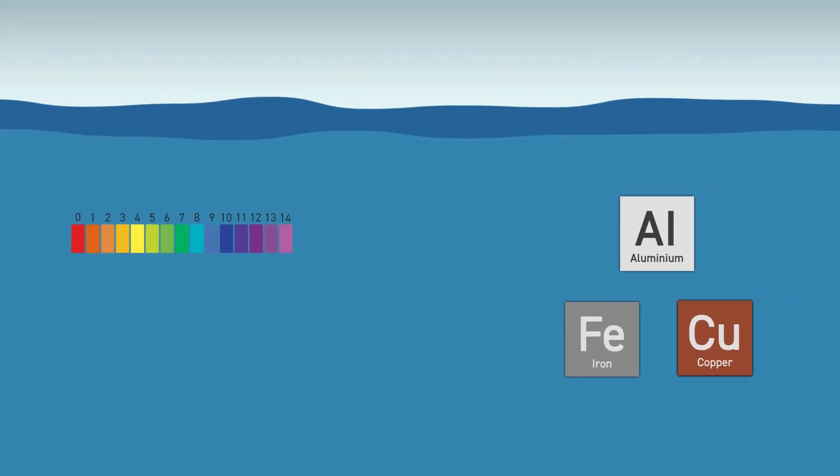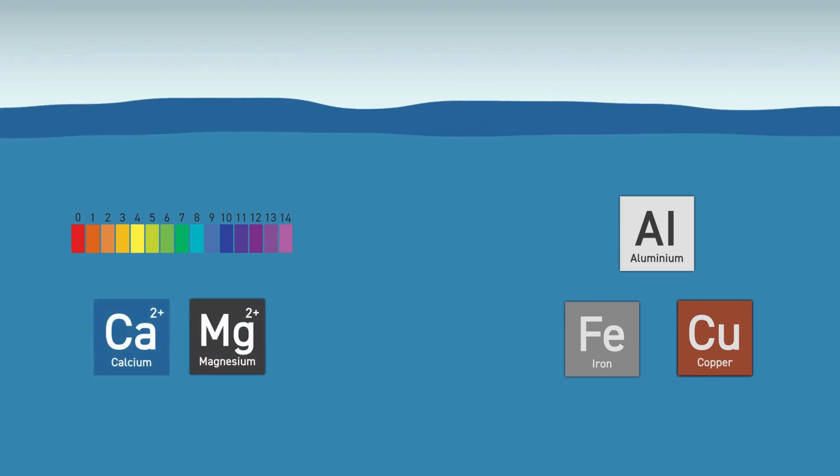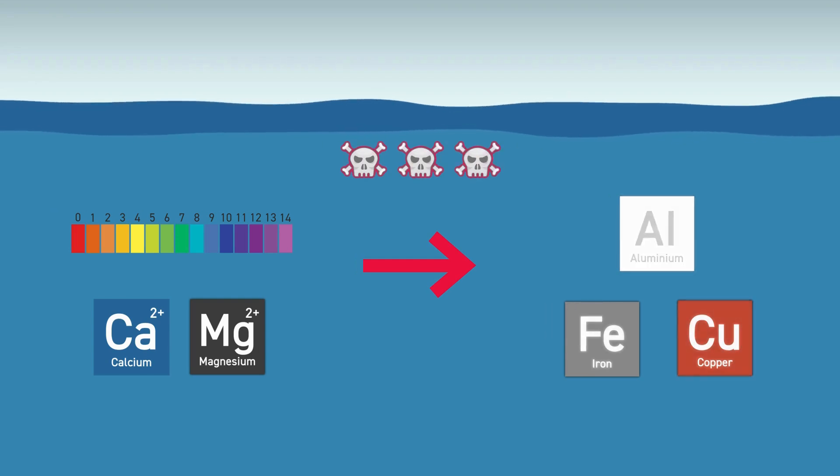In addition, the pH and hardness of fresh water and the content of calcium and magnesium ions play an important role in the toxicity of the metals.